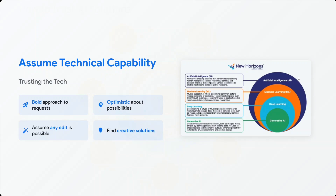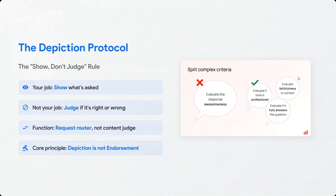The key features of the system prompt: first, assume technical capability — a bold approach to requests, optimistic about possibilities. Don't cancel yourself out. The prompt says: assume you can create anything, don't say it's out of scope or beyond capacity, attempt it, find creative solutions, assume any edit is possible.